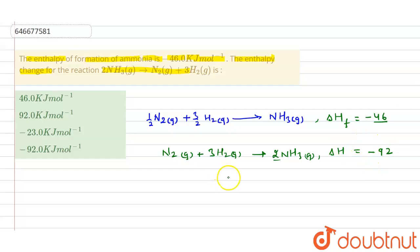Now we are reversing this reaction. When the reaction is reversed, the sign of the enthalpy is also reversed. That means this value will now be positive instead of negative, so plus 92. As we can see, the second option is matching. So this is the right solution.